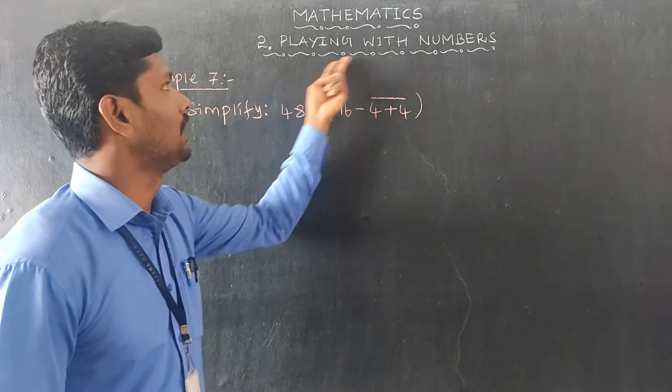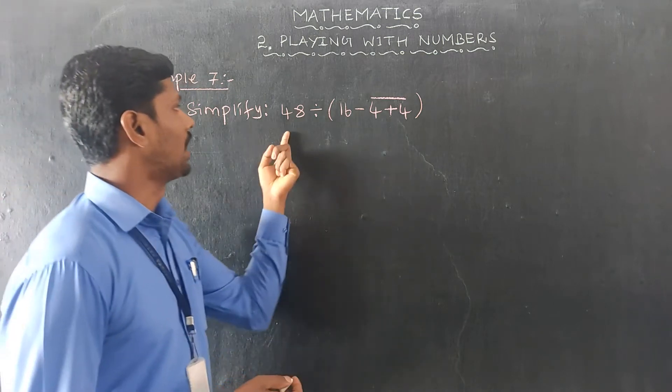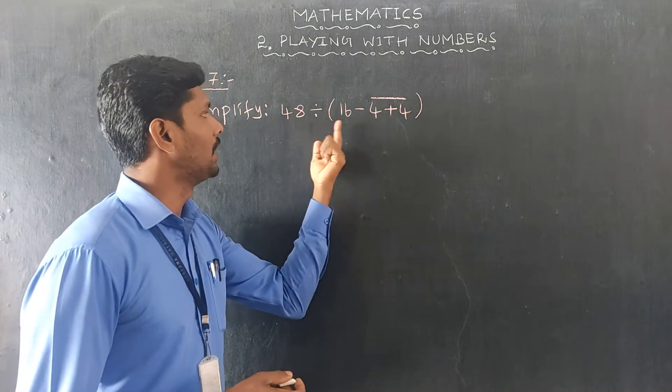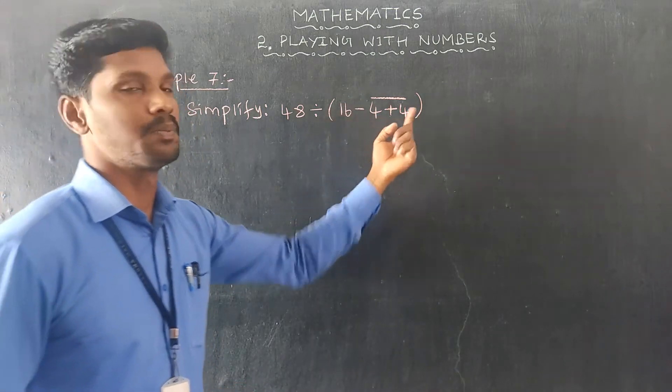Dear students, in the second chapter, Playing with Numbers, Example 7: Simplify 48 divided by open bracket 16 minus line bracket 4 plus 4 close line bracket close bracket.